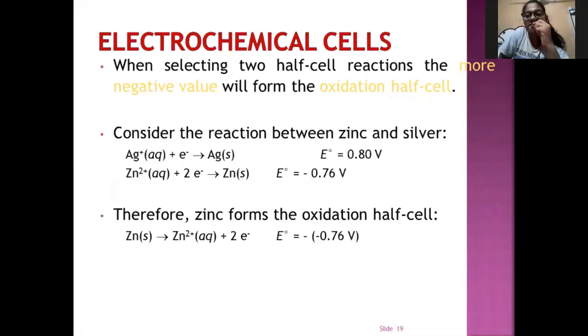Electrochemical cells. When selecting two half cell reactions, the more negative value will form the oxidation half cell. Consider the reaction between zinc and silver. The reaction is Ag plus plus one electron gives Ag and Zn plus two plus two electron gives Zn. They have different electrode potentials. Therefore zinc forms the oxidation half cell because it has the highest oxidation potential.